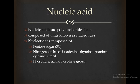First, what is a Nucleic Acid? Nucleic Acid can be defined as a polynucleotide chain. It is composed of units which are known as nucleotides. Each nucleotide consists of three parts: pentose sugar, nitrogenous bases, and phosphoric acid. Pentose sugar is the 5-carbon sugar.